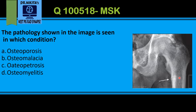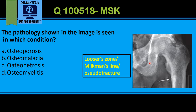A pseudo fracture in osteomalacia is a line which will be perpendicular to the bone, and it will not traverse the entire cortex — it will be only a partial line. It is also called a Looser zone or Milkman's line.